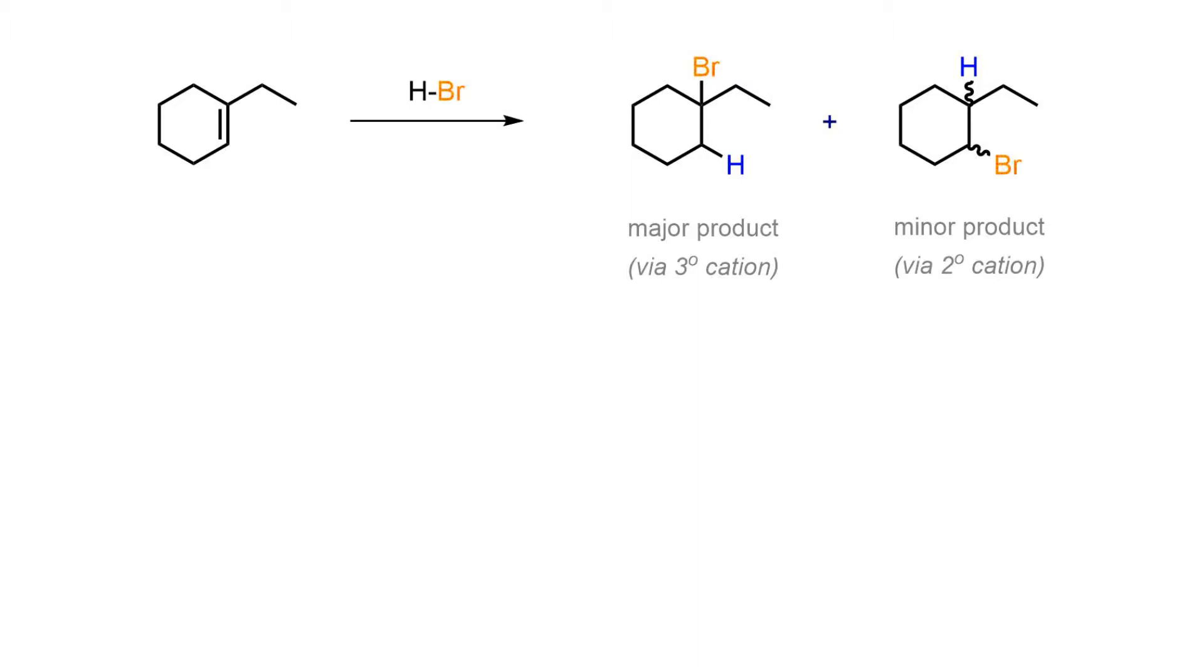The proton and halide add to the alkene to give saturated products. If the alkene is unsymmetrical, we observe a distribution of regio isomeric products. The more highly substituted alkyl halide is usually isolated as the major isomer.